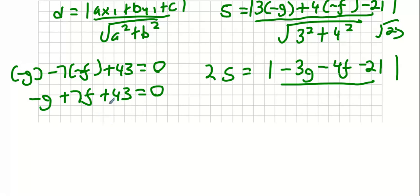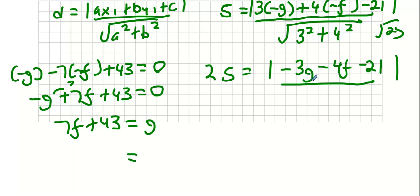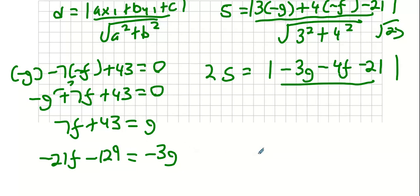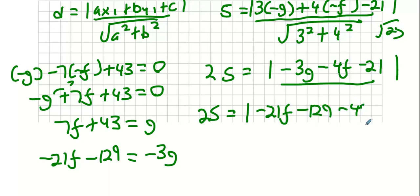I'll isolate g: move g to the other side to get g equals 7f plus 43. Now I can substitute into the distance equation. Multiplying both sides by minus 3 gives minus 3g equals minus 21f minus 129. Substituting into 25 equals minus 3g minus 4f minus 21 gives 25 equals minus 21f minus 129 minus 4f minus 21.